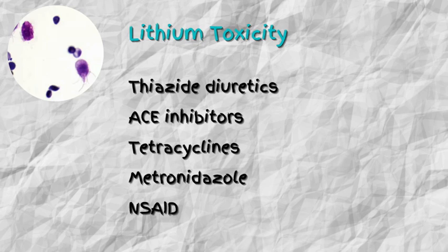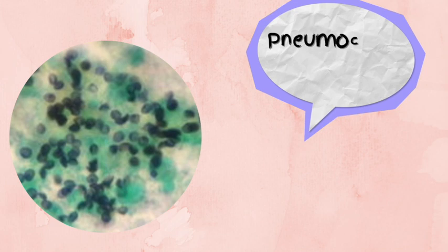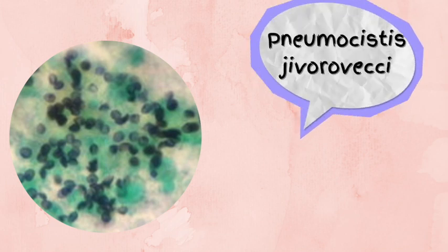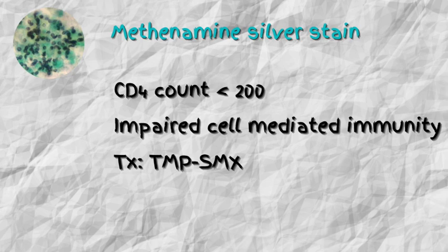Now let's move on to the next organism. What organism can you see in this picture? Pneumocystis jirovecii — if you said that, you are absolutely correct. To view this organism, you have to use a methenamine silver stain. Patients typically present with a Pneumocystis jirovecii infection if they have a CD4 count less than 200, which commonly occurs in patients with HIV infections, affecting those with impaired cell-mediated immunity. This can be treated with trimethoprim.